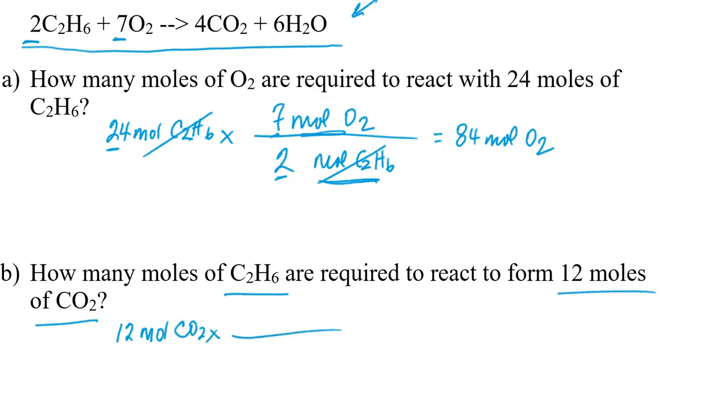And if I consult the balanced chemical equation, if I want to convert from moles of carbon dioxide to moles of ethane, then for every four moles of carbon dioxide that are formed, two moles of the ethane were needed to form it. And so my units of moles of carbon dioxide would cancel and I would need to multiply 12 by 2 and divide by 4. And if I do that, I get 6.0 moles of ethane.